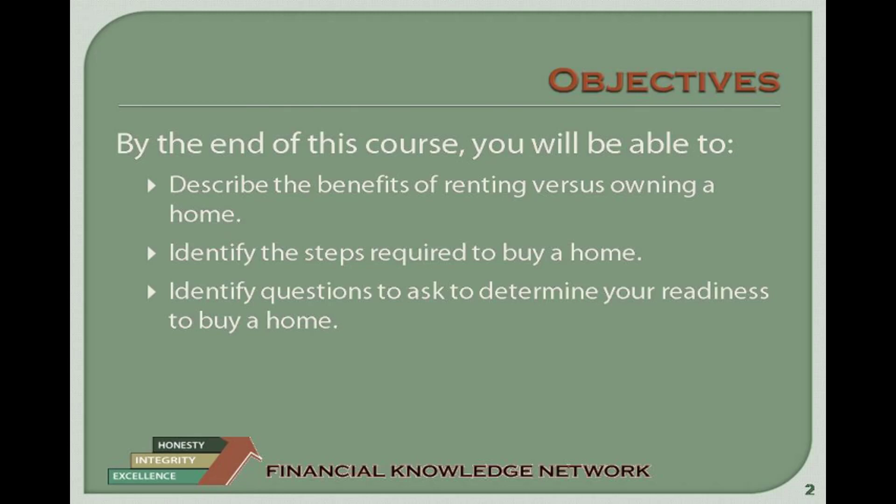Are you ready to buy a home? Use these questions to help you decide. Do I have a steady source of income? This usually means you have a job or other sources of income. Have I been employed on a regular basis for two or three years? Is my income reliable? Do I have a credit history? This refers to whether you have ever borrowed money for any purpose. Do I have a good record of paying bills? Will I be able to pay my bills and other debts? Do I have the ability to make the mortgage payment every month, plus handle additional costs for taxes, insurance, maintenance, and repairs?